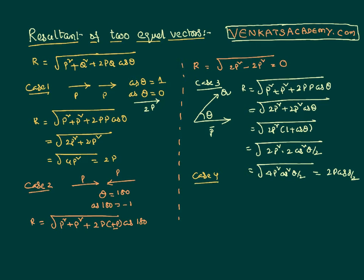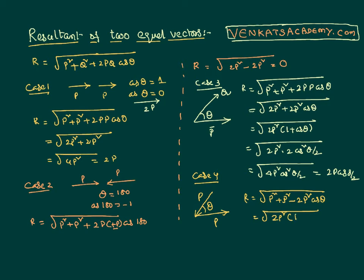Suppose the problem is the same — vectors p and p — but now they are in opposite directions with an angular separation θ. I have to find the resultant. As they are in the opposite direction, I write: R = √(p² + p² − 2p²cosθ) = √(2p²(1 − cosθ)). Using the trigonometric identity 1 − cosθ = 2sin²(θ/2), the answer becomes 2p·sin(θ/2).